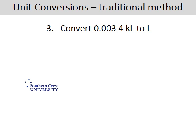Third question: we need to convert 0.0034 kilolitres to litres. The conversion here you may not find in a book, but it's very simple to derive. One kilolitre — kilo means 1,000 — so that means it's 1,000 litres. To go from kilolitres to litres: 1 to 1,000, you times by 1,000.